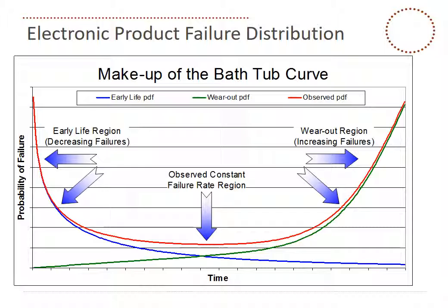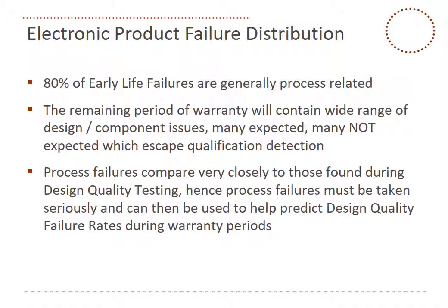From this data, you're going to see how we predict a 12-month failure rate using process information. 80% of early life failures are generally process related. The remaining period of warranty will contain a wide range of design and component issues — many expected, or many not expected — that escape qualification detection. Process failures compare very closely to those found during good, strong design quality testing, which we covered in an earlier webinar. Hence, process failures should be taken seriously and can be used to help predict warranty failure rates.